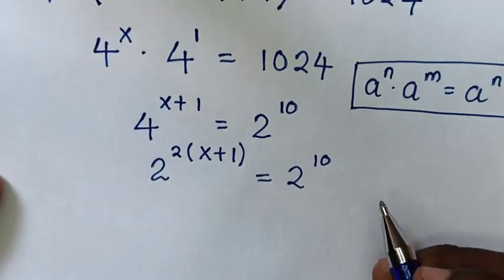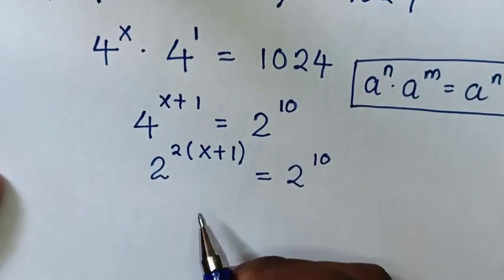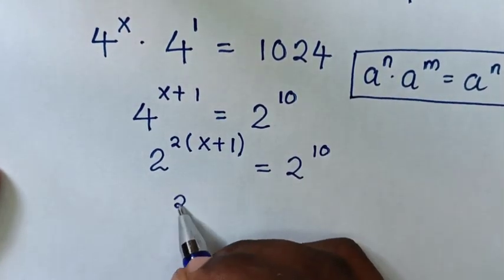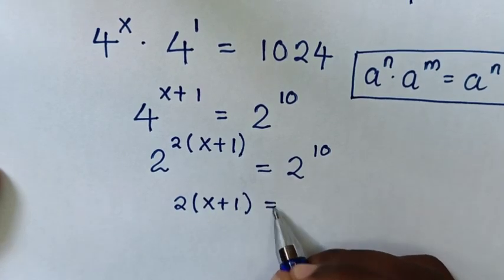Now we have common base of 2. So we will compare the powers. So here it will be 2 bracket power of x plus 1 is equal to 10.